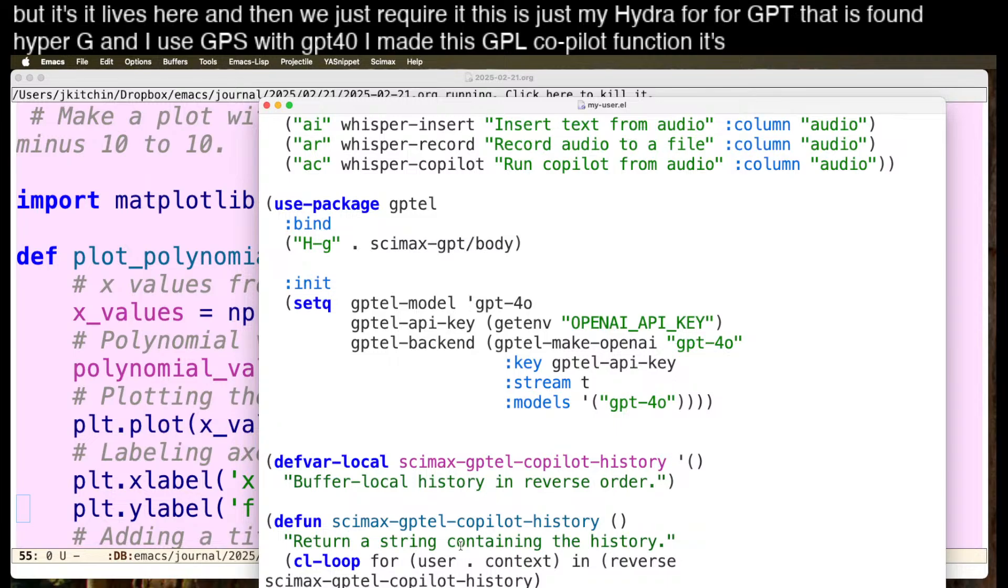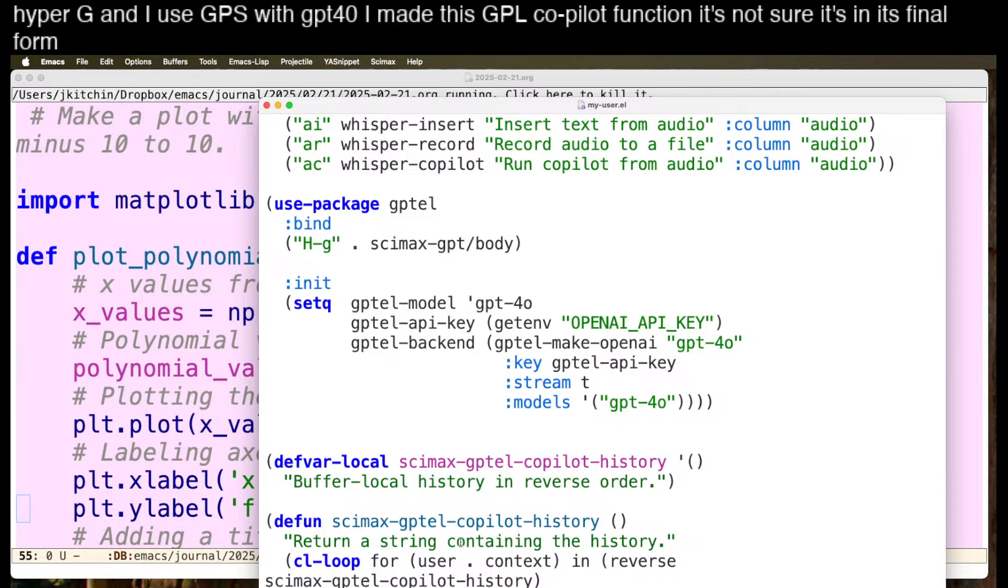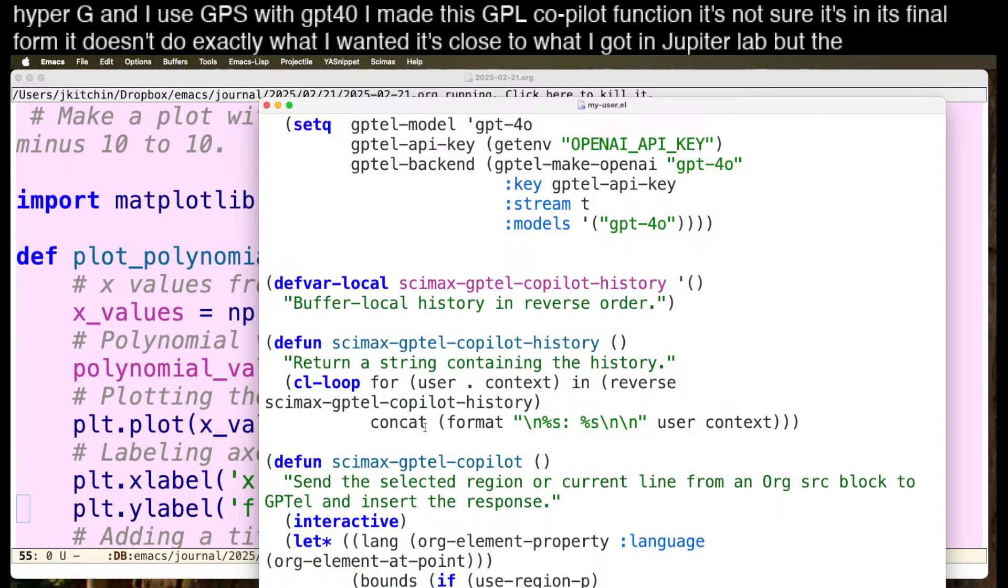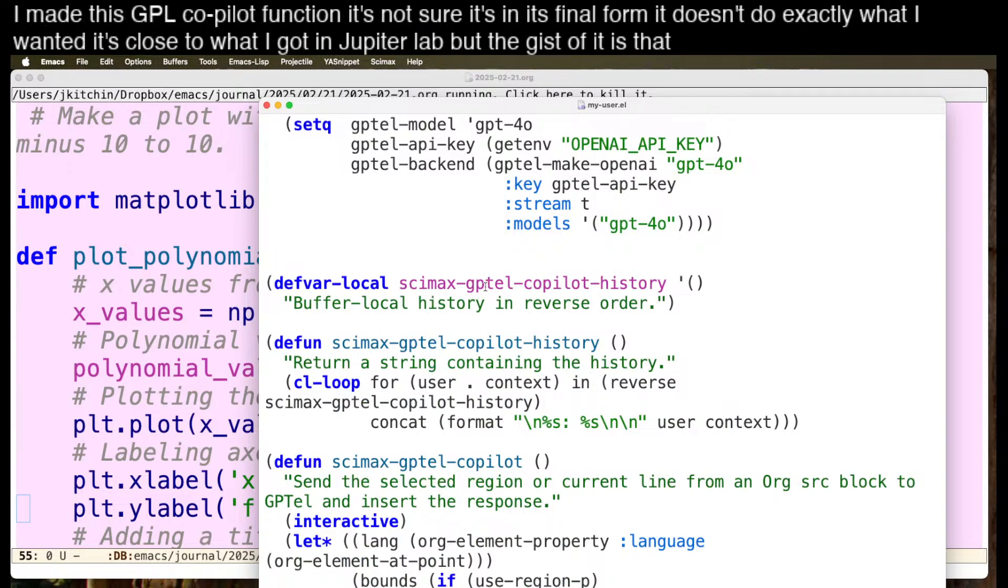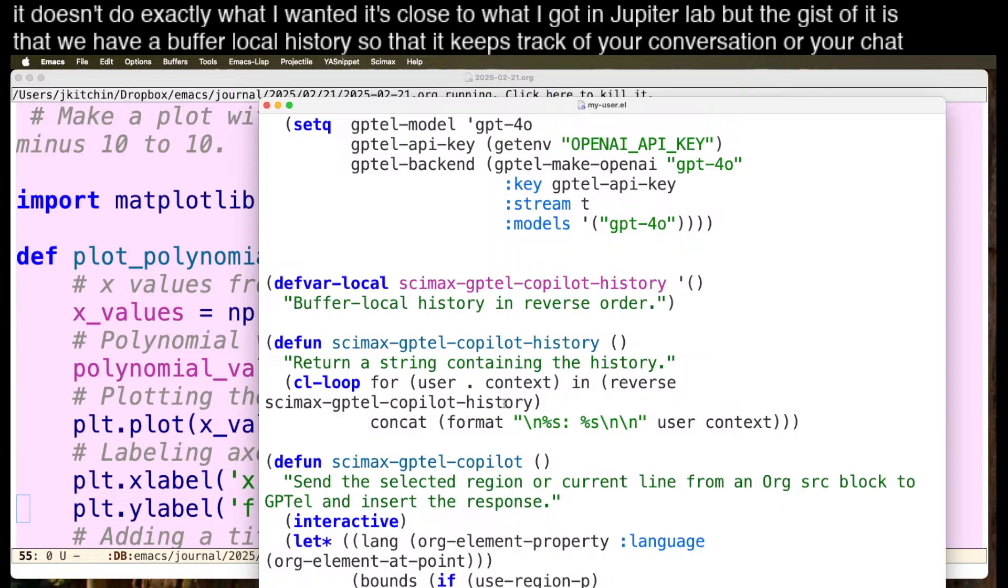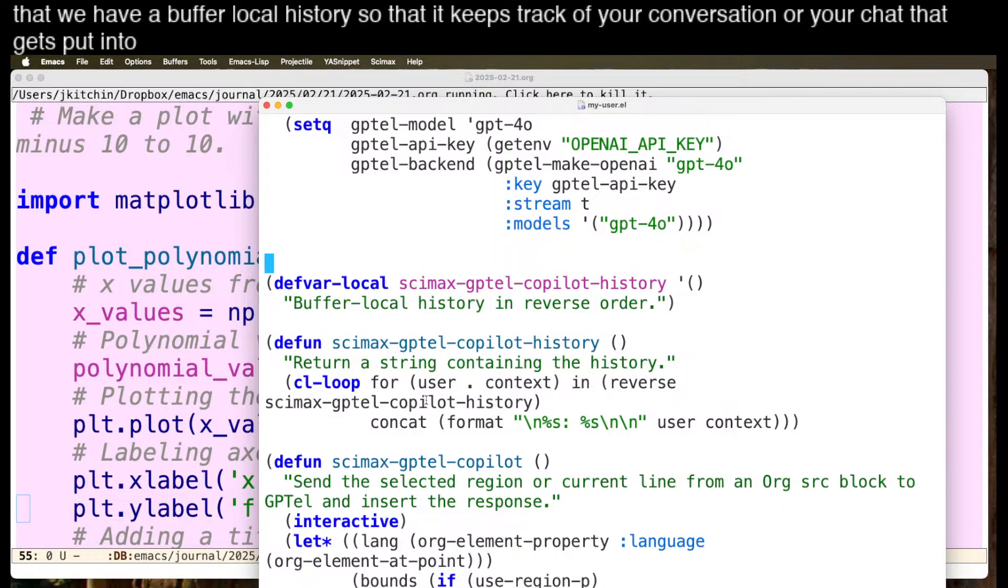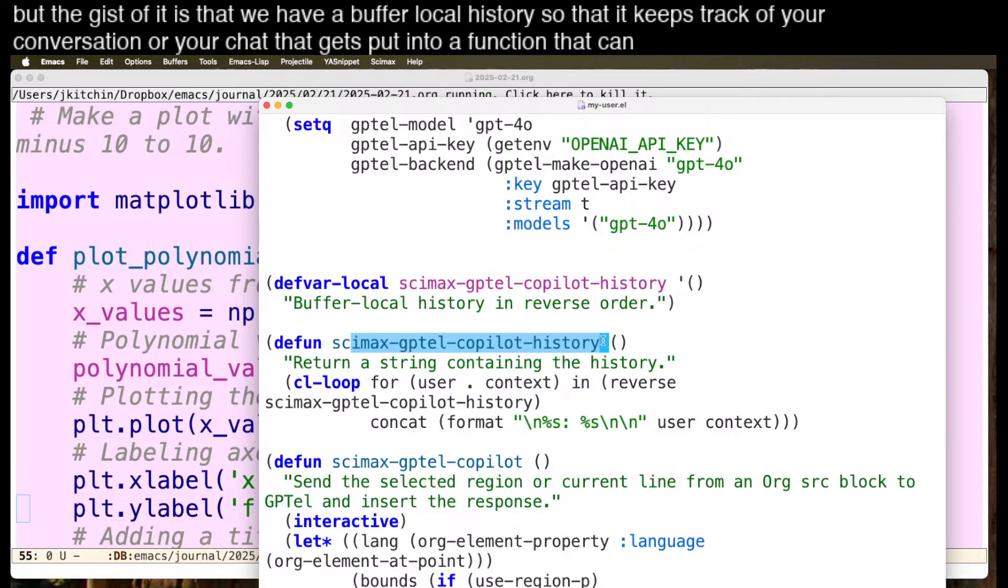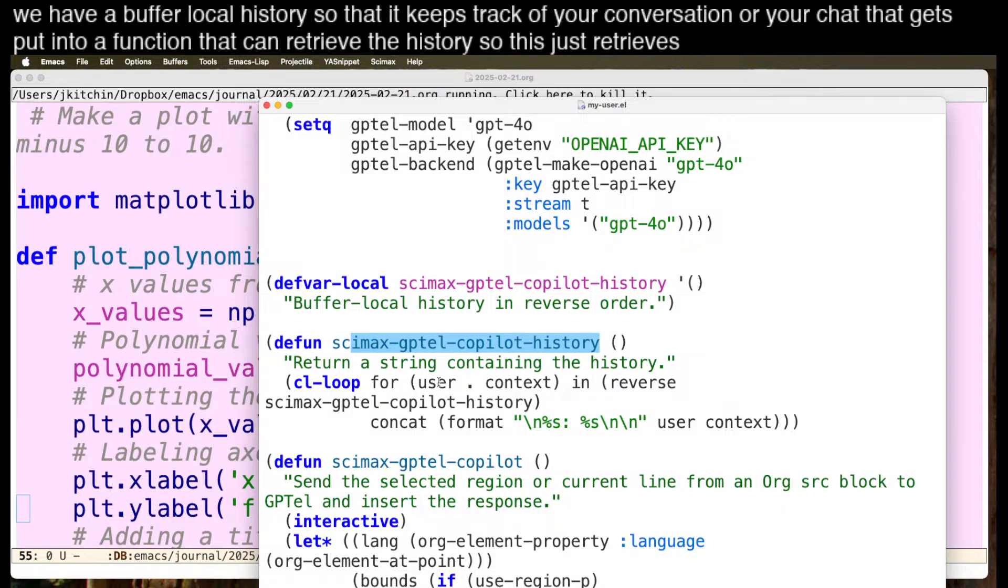I made this GPTEL copilot function. I'm not sure it's in its final form. It doesn't do exactly what I wanted. It's close to what I got in JupyterLab. But the gist of it is that we have a buffer local history so that it keeps track of your conversation or your chat.